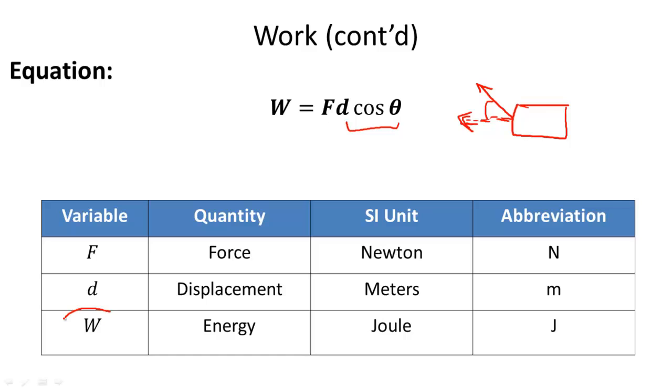The only new variable in this equation is work. And work is a quantity of energy which we will learn about in the next topic. The unit for work is joules and the abbreviation is J. So this is really the only new variable that we learned.